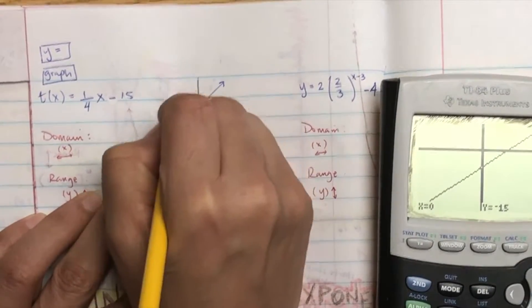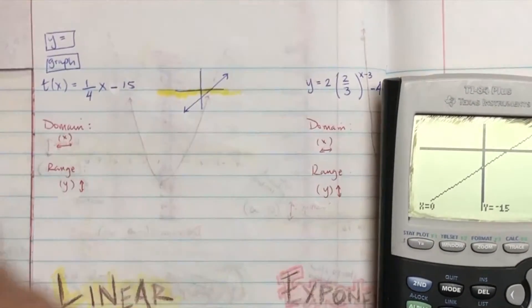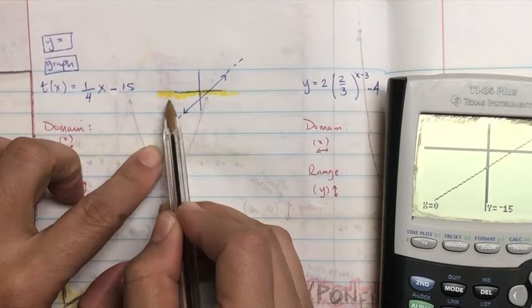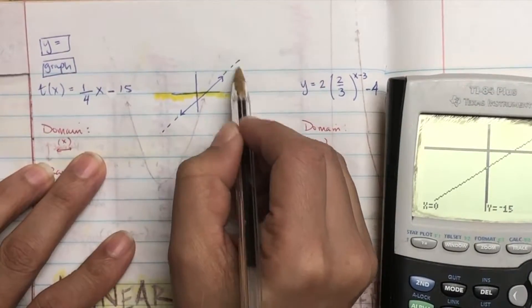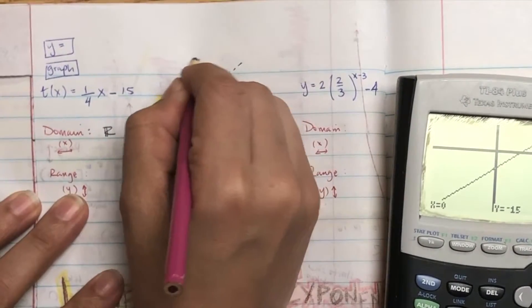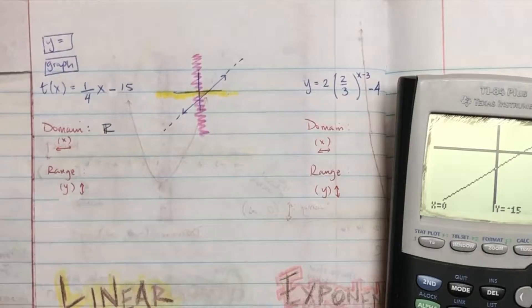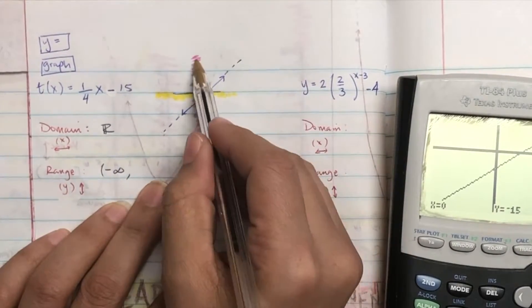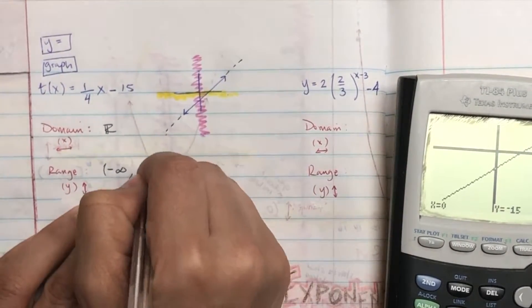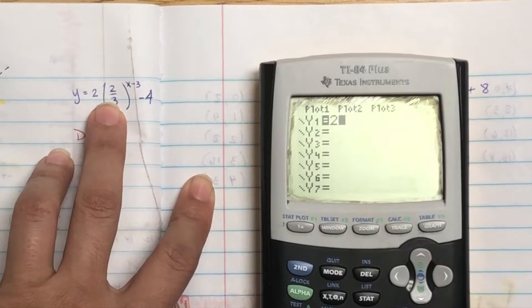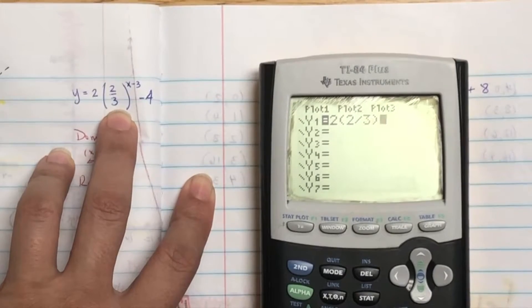Now let's look at domain and range. Domain is x, so I'm going to color the x-axis. Look completely to the left — is there a line? If I extend it, yes there is. If I go down, there's a line, so it's negative infinity. Same thing for the right-hand side. Same thing for y — at the bottom, is there a graph? Yes, so it starts at negative infinity. There's a graph there too, so it's all real numbers.